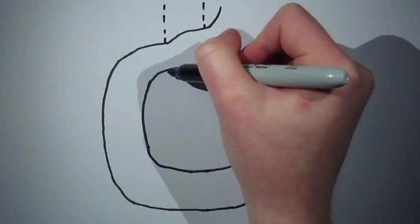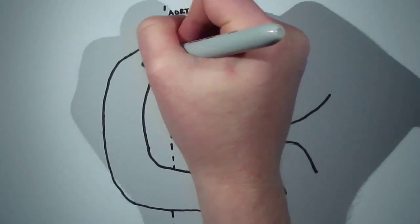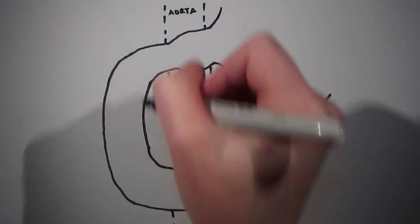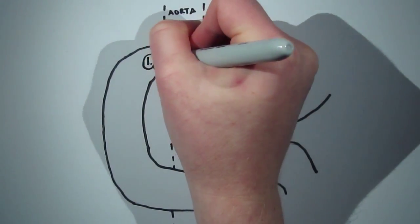The duodenum is the first part of the small intestine, traveling from the pylorus of the stomach to the duodenal jejunal flexure. There are four parts of the duodenum.